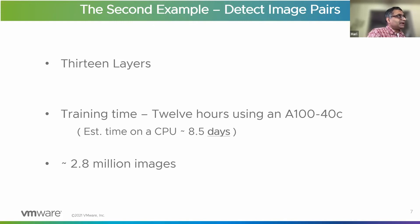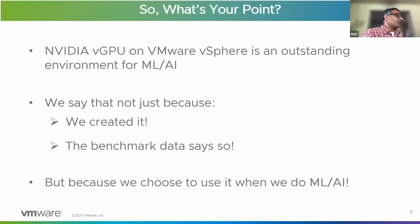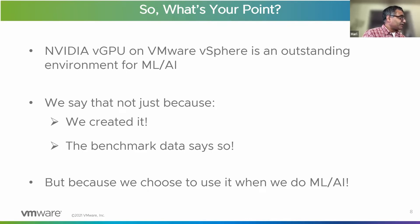The point I'm making with these examples is this: NVIDIA vGPU on vSphere is an outstanding, high-performance environment for ML AI. We're not saying this simply because we created it, or because benchmark data will show virtualized GPUs have near bare-metal performance. We say this because we use this environment in-house. When we do ML AI, we choose NVIDIA vGPU on vSphere because it's the best solution. We've used it in-house, we know where the pain points are, and we've removed them. That's why we recommend it to you — it's the best environment for your ML AI.